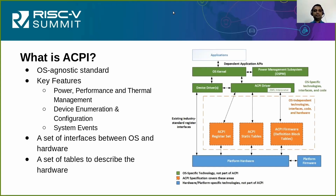So, what is ACPI? ACPI is an operating system-agnostic standard, originally created by Intel, Microsoft, and Toshiba in 1996, with HP and Phoenix joining later. It slowly gained momentum and is widely adopted by many operating systems and processor architectures. Some key features of ACPI are power management at various levels — system, processor, and device power management — as well as performance management, thermal management, platform device enumeration and configuration, and a system event mechanism for power, thermal, and device hot-plug events.